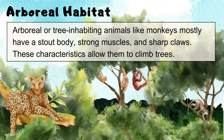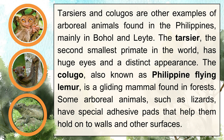The second type of animal habitat is the arboreal habitat. Arboreal or tree-inhabiting animals like monkeys mostly have a stout body, strong muscles, and sharp claws. Tarsiers and colugo are other examples of arboreal animals found in the Philippines, mainly in Bohol and Leyte. The tarsier, the second smallest primate in the world, has huge eyes and a distinct appearance. The colugo, also known as the Philippine flying lemur, is a gliding mammal found in forests. Some arboreal animals, such as lizards, have special adhesive pads that help them hold on to walls and other surfaces.